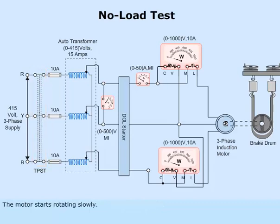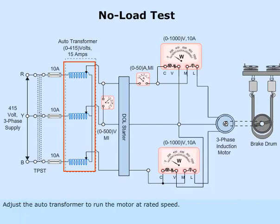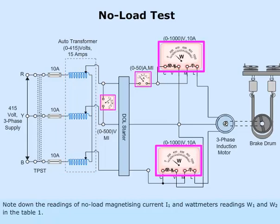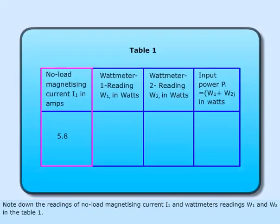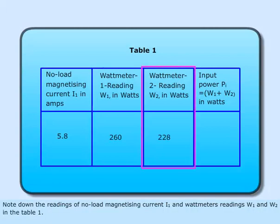The motor starts rotating slowly. Adjust the autotransformer to run the motor at rated speed. Note down the readings of no-load magnetizing current I1 and wattmeter readings W1 and W2 in table 1.